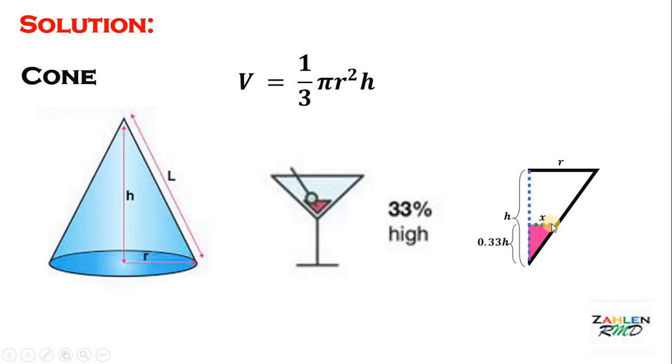To find the radius, we will use similar triangles. We have x over r equals 0.33h all over h. Next, solve for x in terms of r. As you can see, we can cancel out h on the numerator and multiply r both sides. And we get that x equals 0.33r.